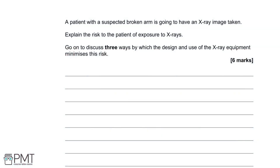A patient with a suspected broken arm is going to have an x-ray image taken. Explain the risk to the patient of exposure to x-rays. This is a six-mark question. The risk of x-rays is that they are ionizing radiation — if you're exposed to too much ionizing radiation, you're at a higher risk of mutations or cancer.